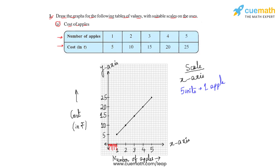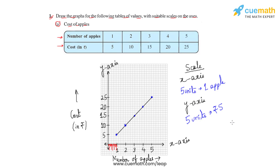Similarly for the y-axis, if we take the scale, we see that five units on the y-axis represents rupees five. These are the points which we have taken from this table to get this line graph. So this is how we are going to answer the first part of this question.